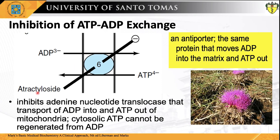The last group of agents that interfere with oxidative phosphorylation are the adenine nucleotide translocase inhibitors, the prime example being atractyloside. Atractyloside is a toxic hydrophilic glycoside formed by a species of thistle found in the Mediterranean region. It disrupts oxidative phosphorylation by specifically inhibiting adenine nucleotide translocase, which transports ADP into and ATP out of the mitochondria. Once these exchanges of adenine nucleotides are disrupted, cytosolic ATP cannot be regenerated from ADP, explaining the toxicity of atractyloside.